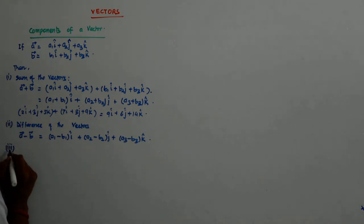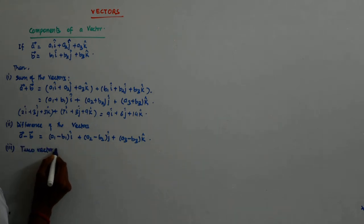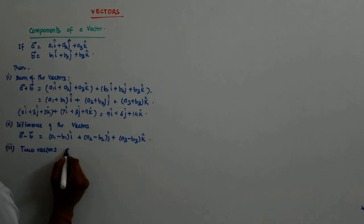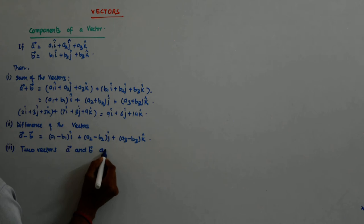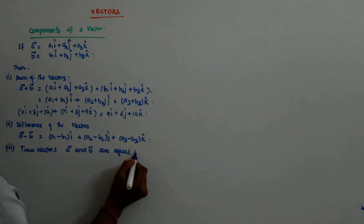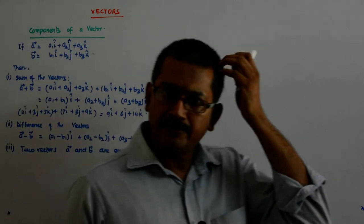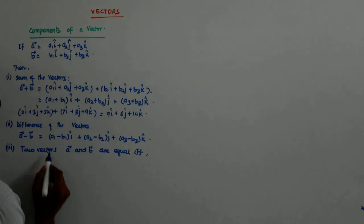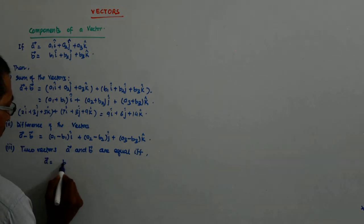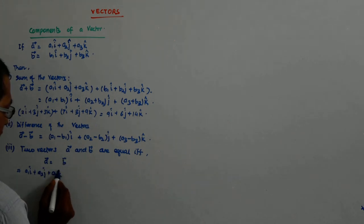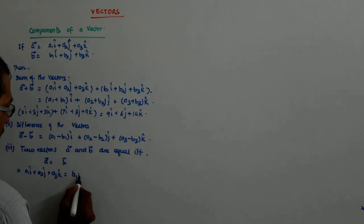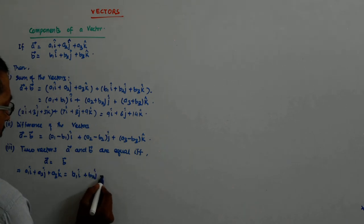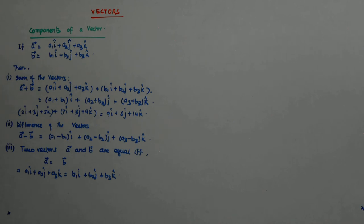Now, you see, two vectors are equal A and B if and only if - see what happens? A is equal to B implies A1 i cap plus A2 j cap plus A3 k cap is equal to B1 i cap plus B2 j cap plus B3 k cap. Now, what happens? When will they be equal? When their coefficients are equal.